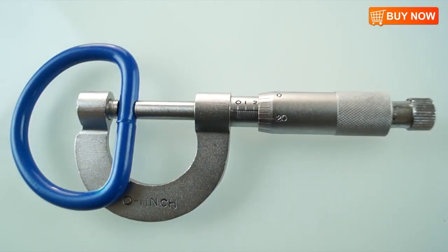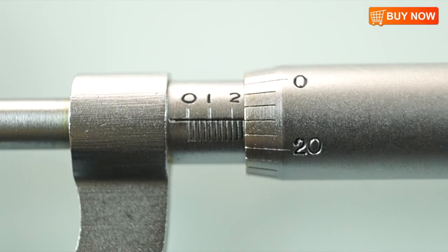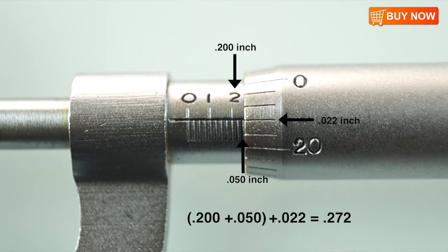You will then have your reading. For this object, the measurement reads point two five zero plus point zero two two, giving you a measurement of point two seven two or two hundred and seventy two thousandths of an inch.